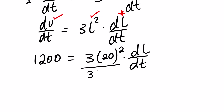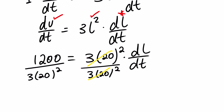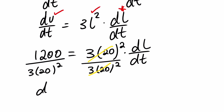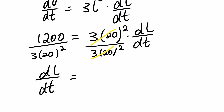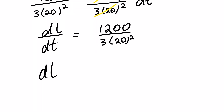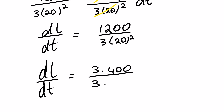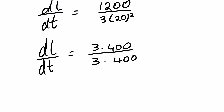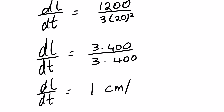We divide both sides by 3 times 20 squared. This results in dL over dt equals 1200 over 3 times 20 squared. We can simplify: 1200 is the same as 3 times 400, and at the bottom we have 3 times 400. So dL over dt equals 1 centimeter per minute.